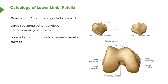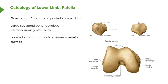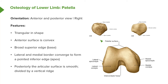The patella is a large sesamoid bone that develops intraendously after birth as an ossification within the patellar tendon. It is located anterior to the distal femur, triangular in shape with a convex anterior surface, a broad superior base, lateral and medial borders converging to a pointed inferior apex. Posteriorly, the articular surface is smooth and divided by a vertical ridge, allowing it to sit in the patellar surface of the distal femur.